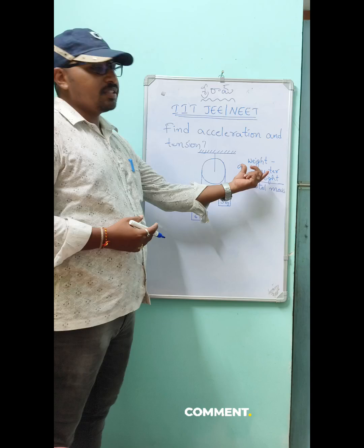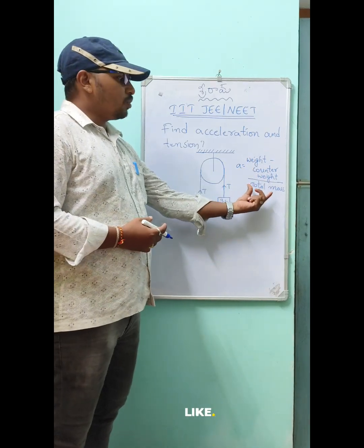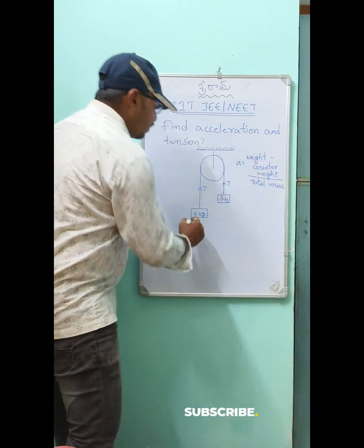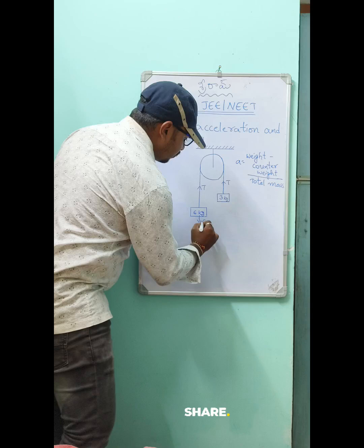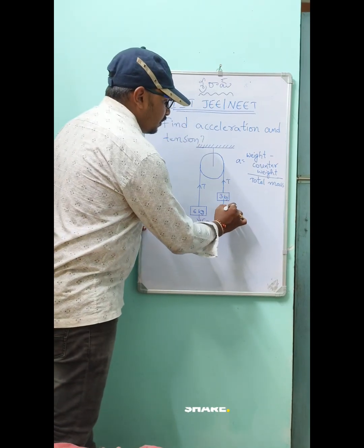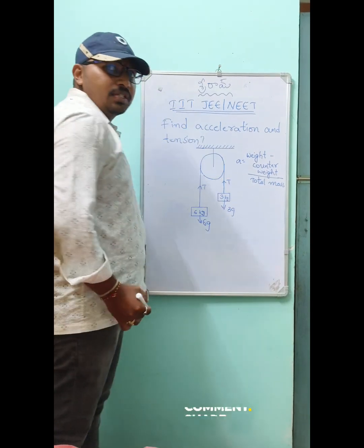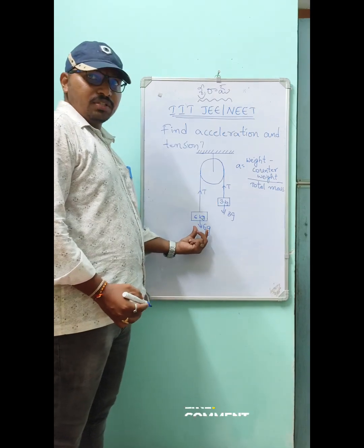First, to find the acceleration, we already discussed the formula: weight minus counterweight divided by total mass. The weight acting downward here is 6g, and here it is 3g. Which is greater? 6g, so this is the weight.